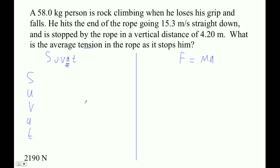OK, so they're going 15.3 meters per second straight down. That means their initial velocity is negative 15.3. Final is 0, because the rope stops them. And then the displacement is 4.2 meters. And let's assume they move down while they're being stopped.